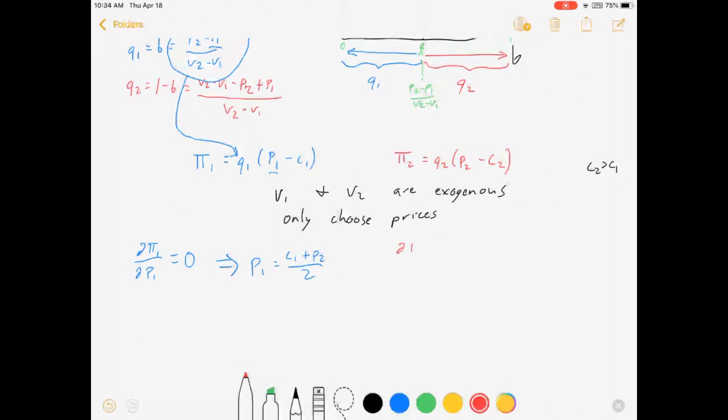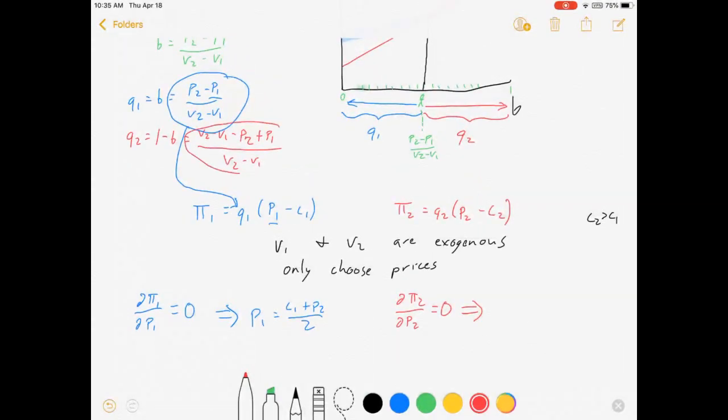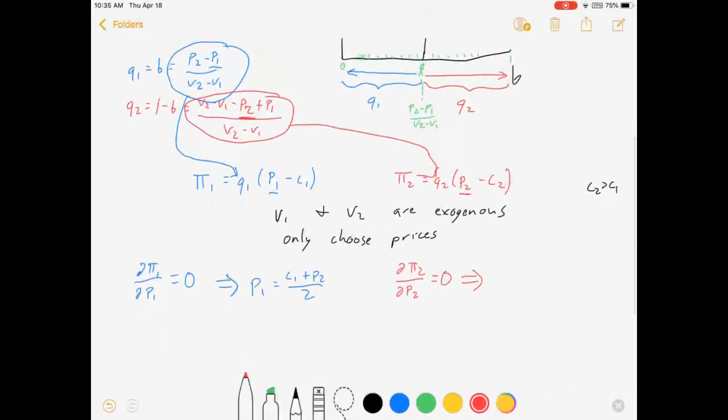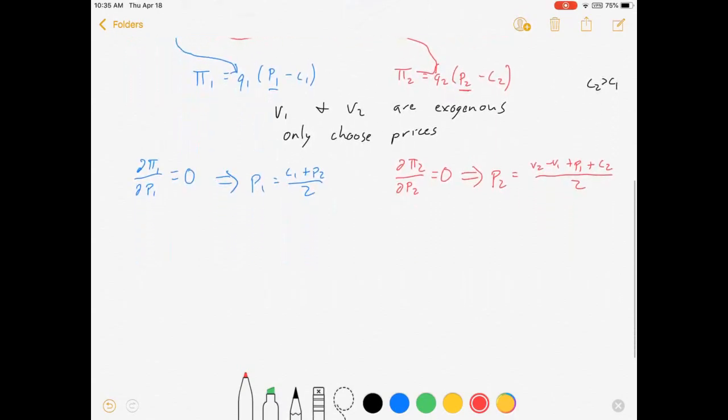So for firm two, dπ2 over dp2, set that equal to zero for our profit maximization condition. Again, the same idea. All of this stuff gets substituted in there, and there's prices here and there. So keep it all in mind. And what am I going to get? I'm going to get that p2 is equal to v2 minus v1 plus p1 plus c2 all over 2. Alright. So what's next? Well, we basically have best response functions for each firm - their prices as functions of the other firm's price.